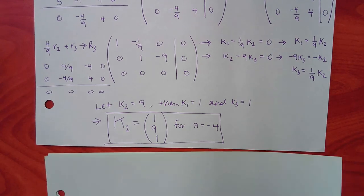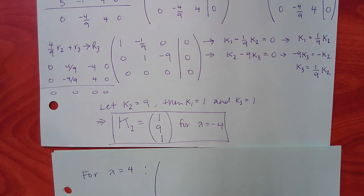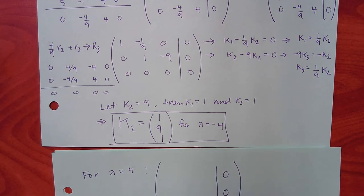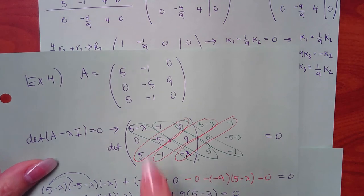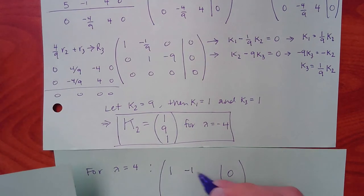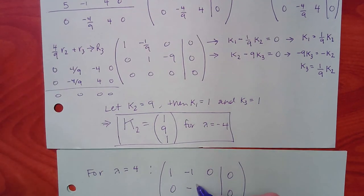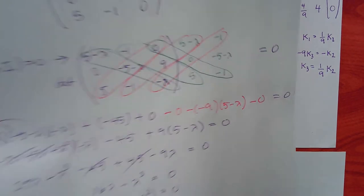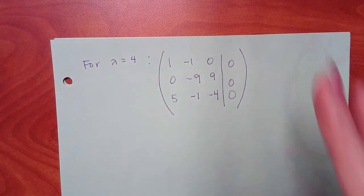For lambda equal to 4: plug 4 into the diagonal entries. Five minus 4 is 1, negative 5 minus 4 is negative 9, and the 0 minus 4 gives negative 4. Set up the augmented matrix.